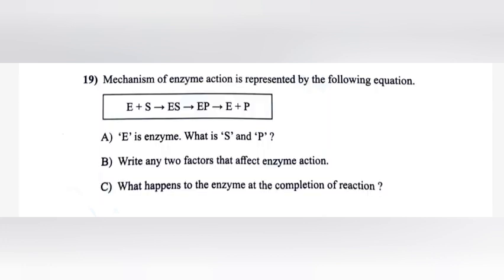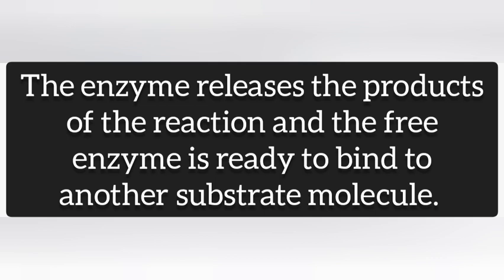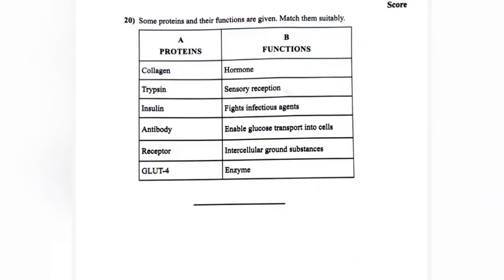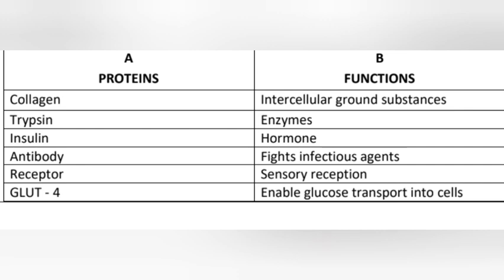Answer: Collagen - intercellular ground substances, Trypsin - enzymes, Insulin - hormone, Antibody - fights infectious agents, Receptor - sensory reception, GLUT-4 - enable glucose transport into cells.